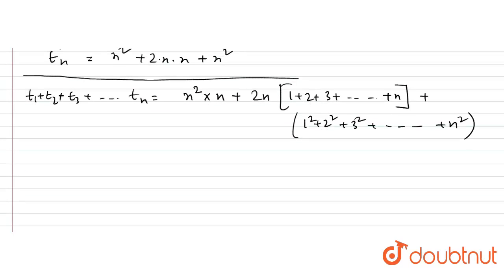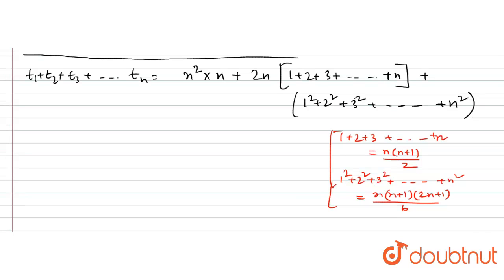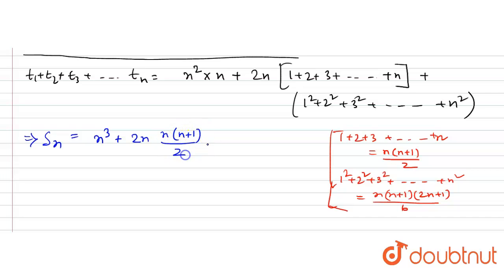We will use the standard formulas. The formula for 1 + 2 + 3 + ... + n equals n(n+1)/2. The formula for 1² + 2² + 3² + ... + n² equals n(n+1)(2n+1)/6. So S_n equals n³ + 2n · n(n+1)/2 + n(n+1)(2n+1)/6.